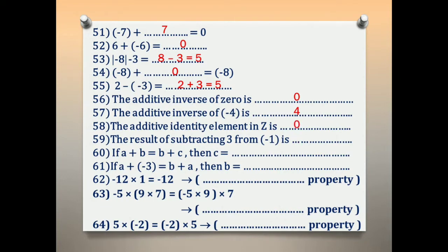Number 59: the result of subtracting 3 from negative 1. Write the number after 'from' first — negative 1. 'Subtract' means minus. Minus 3. So the answer is negative 1 minus 3.